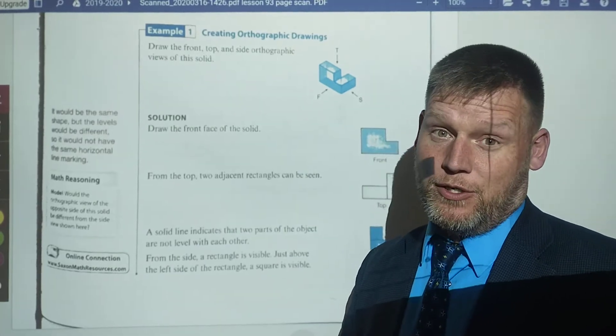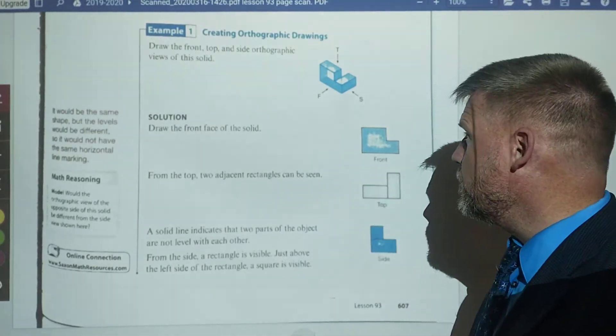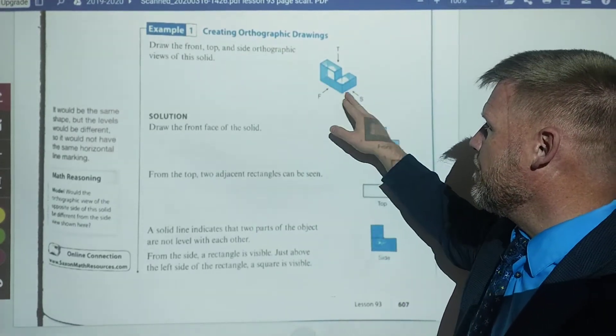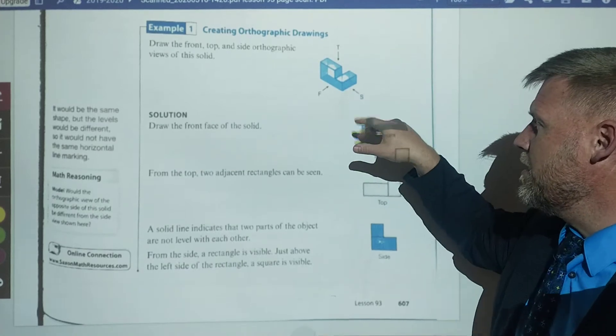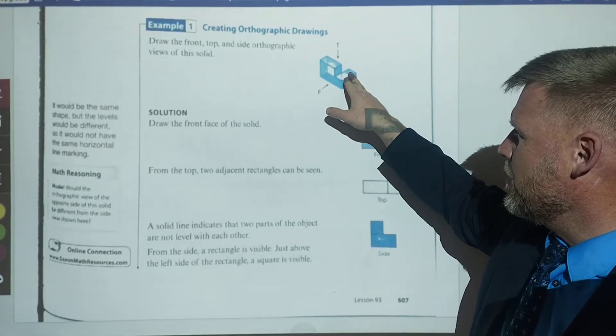I went ahead and took a picture of the book for you here. This right here that they ask you to draw in creating an orthographic drawing, this is the three-dimensional image we're starting with. And if you can see the depth of it, it kind of looks like maybe a box and a box attached going this way.